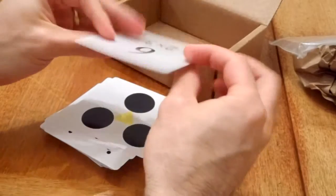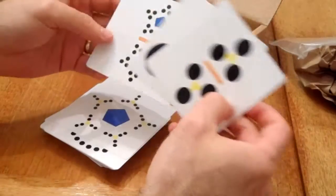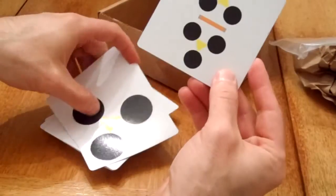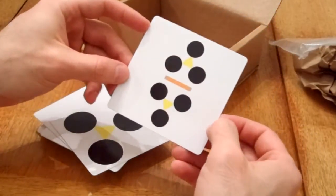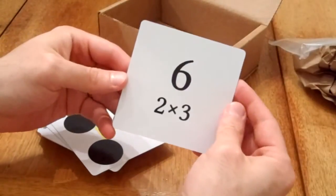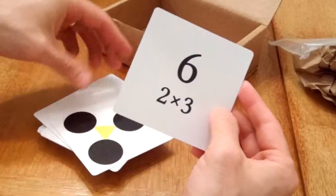These feel pretty high quality. So each of these cards has a factorization diagram on one side, and so this is a card for 6. On the other side it has the number and its factorization.